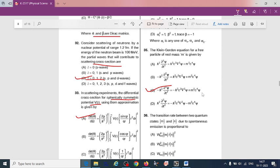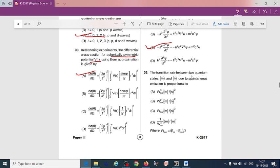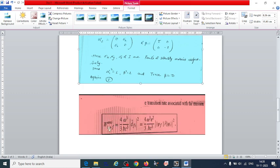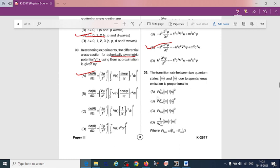The transition rate between two quantum states ket m and ket n due to spontaneous emission is proportional to... So first we should know the formula for transition between two quantum states initial and final state, that is given by this equation. So here we can see omega is to the power of 3, that is omega cube.